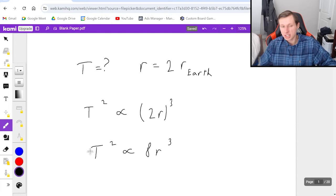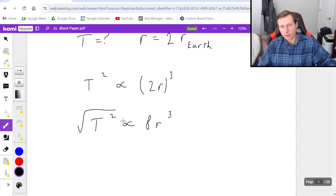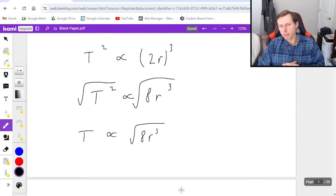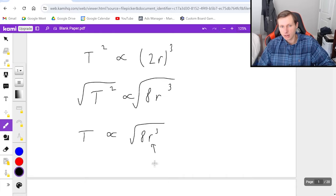And then since I'm solving for T, I have to take the square root of both sides. The left side will just be T. The right side will be square root of 8r cubed. And now maybe you're stuck at this part, but I'm just going to tell you this: This r cubed part is the same as that of Earth, and the only thing that's new is the square root of 8.